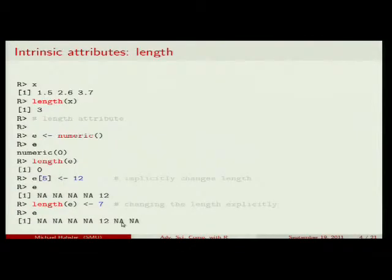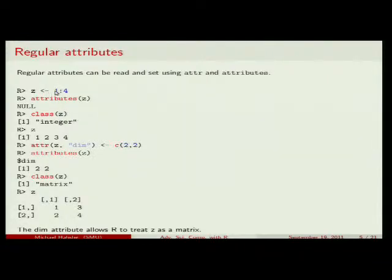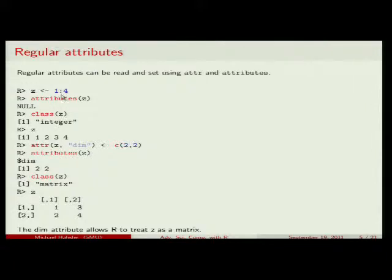In addition to intrinsic attributes, there are regular attributes you can attach to objects. There's a function called attributes() that tells you what attributes an object has. For example, I make an integer vector c with values 1 through 4. Asking attributes(c) returns null — it has no regular attributes, only the intrinsic length. If I ask class(c), it says integer.